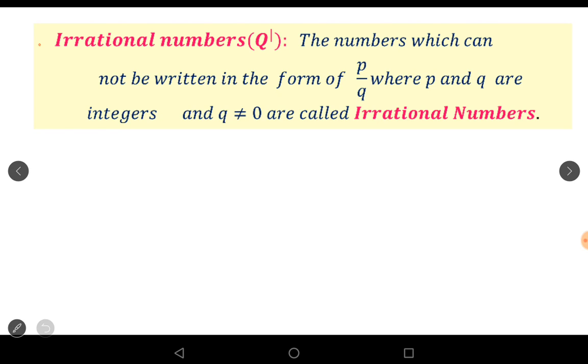We know rational numbers means a number can be expressed in the p by q form. A number can be expressed in the p by q form, that is called rational numbers. A number cannot express in the p by q form, that is called irrational numbers. Irrational numbers are denoted by q dash.